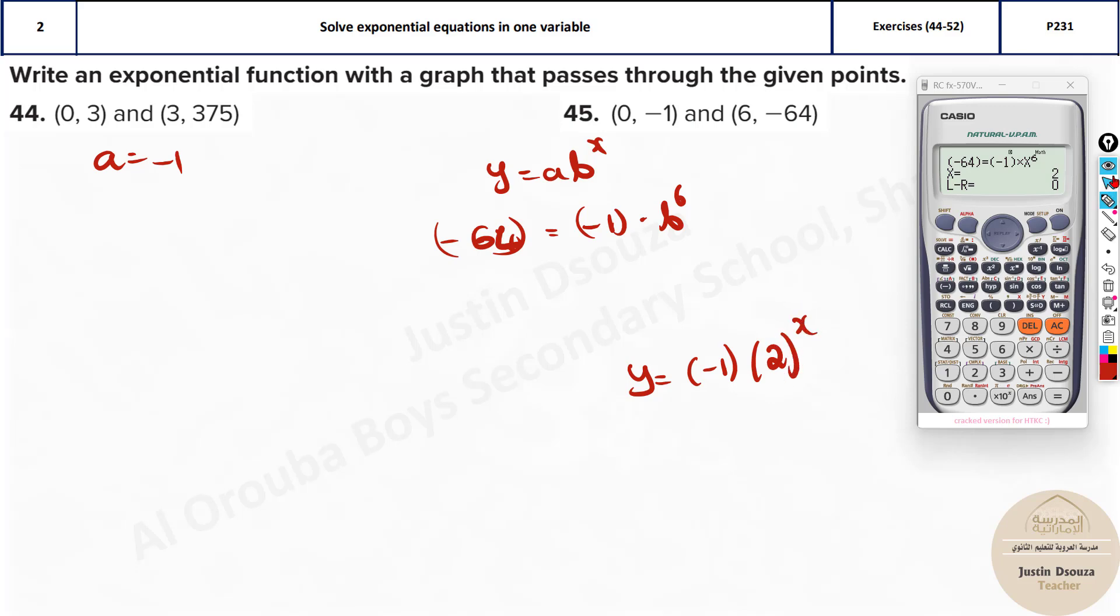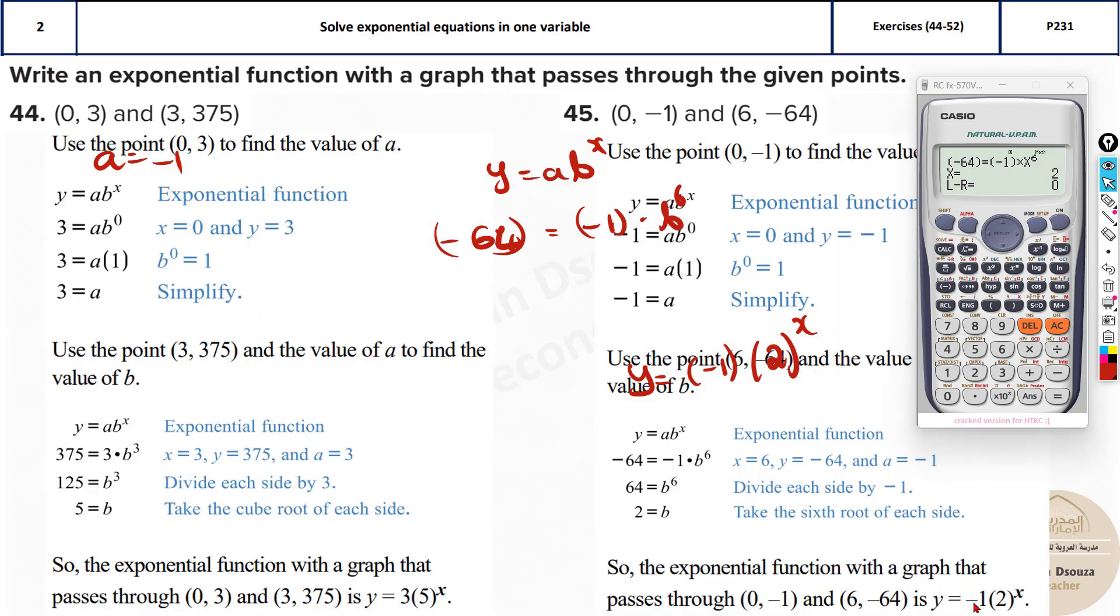So here the equation would be y equals negative 1 into 2 to the power x. Now minus 1 is just minus. You can keep it as just a minus sign. See over here it's written as minus 1 into 2 to the power x. You can write even minus. That's fine. But it's better to write it. The first one, look here, 3 is the a value. And the next point is required to find the b value and solve it.